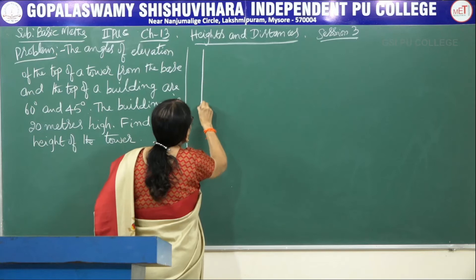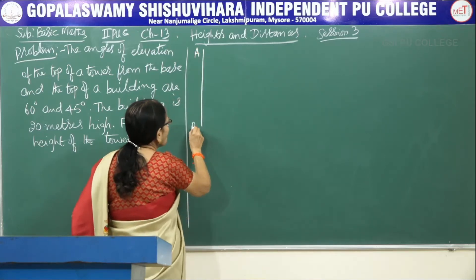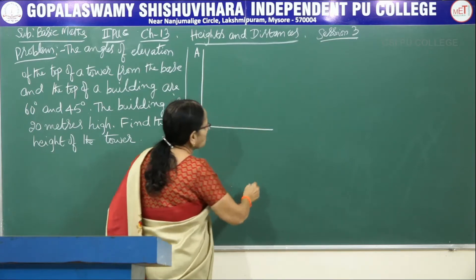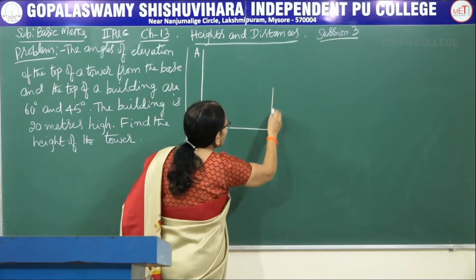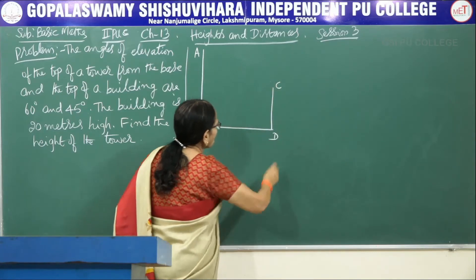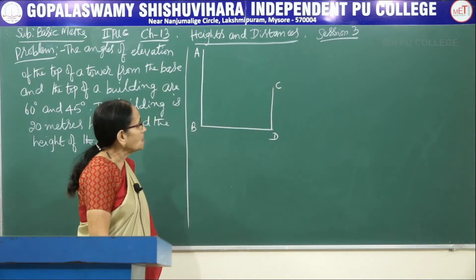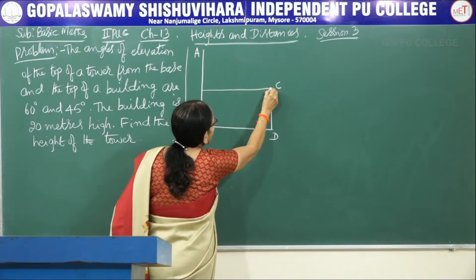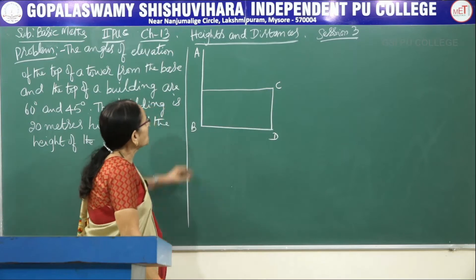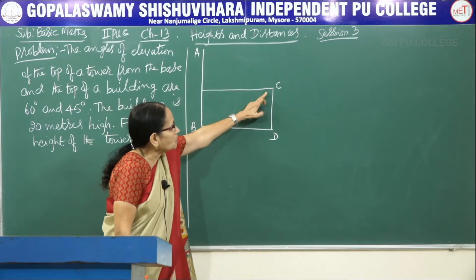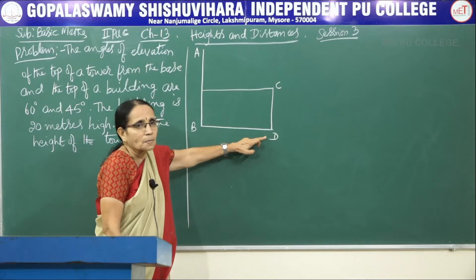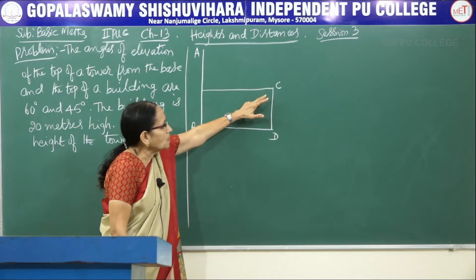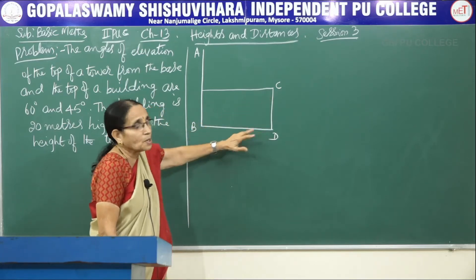Let me take AB to be the tower. Always write the horizontal line and take CD to be the building. So AB is the tower and CD is the building. Here one more horizontal line we have to write. This is the top of the tower and this is the bottom of the building. The top of the tower has been observed from the top of the building as well as from the base of the building.